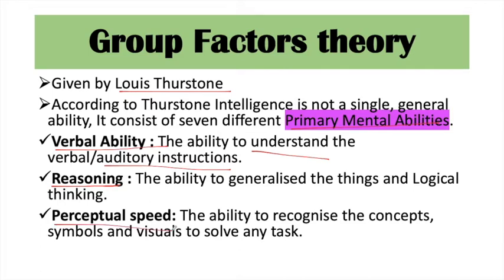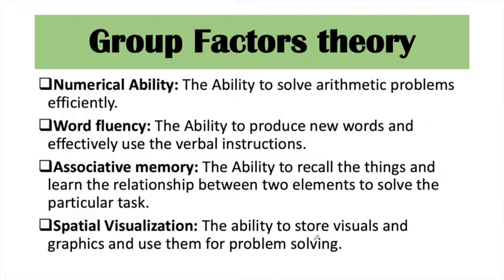Next is perceptual speed — how quickly a child recognizes symbols, visuals, and concepts, and uses them to solve problems. Next is numerical ability, which is related to arithmetic and mathematical problems — how efficiently they are solved.